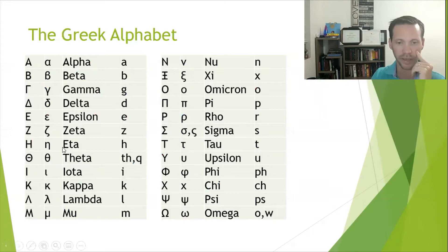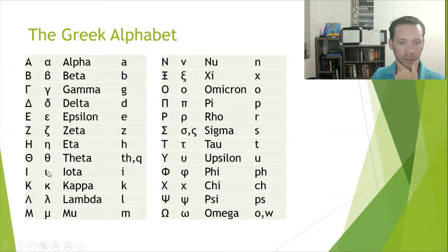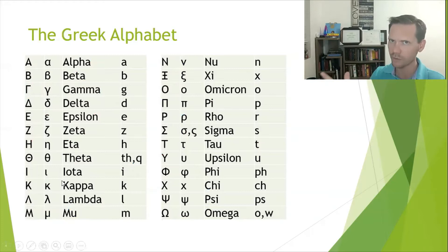Eta — you've already seen it; what we call capital H is the capital letter, and there's your lowercase eta. Theta you already know — the capital is just a capital O with a line in the middle that doesn't connect all the way through. Iota you already know — it just looks like a lowercase i and a capital I. Kappa you already know — it looks like a lowercase k and a capital K.